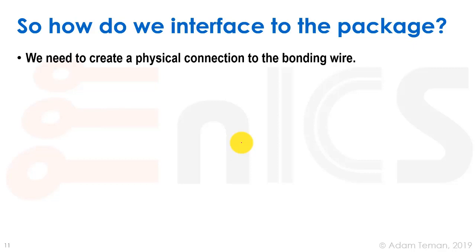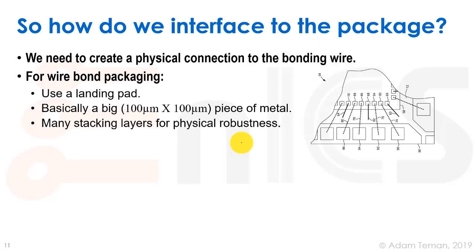We need to create a physical connection to the bonding wire. When we talk about bonding wires, what we do is we have this thing called a landing pad. It has to be big enough that a machine — which operates at real-life sizes, not nanometers — can come and stick a piece of wire here and bond it. So it has to be about 100 microns, or they can go down to maybe 50 microns, but the smaller they are, the more expensive the process and the more you're paying the bonding house. It gets more fragile and more complicated.